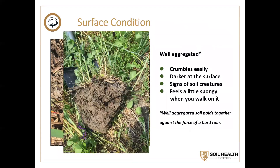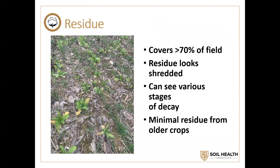Let's talk about residue, surface residue cover. It ought to be about 70, 80, 90%. Many people say if you have healthy soils, you shouldn't see your soil at all. It takes a lot of residue to protect the soil surface. In the 1980s, NRCS was mandated to do highly erodible conservation plans, setting a bar at 30 or 40% residue cover. That's a pretty low bar and it works if the only thing you're looking at is soil erosion. But if we're wanting to improve soil health, we need a lot more residue than that.